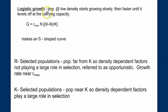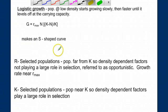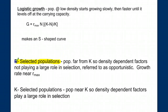In logistic growth, a population at low density starts growing slowly, then accelerates until it levels off at the carrying capacity — and there's our formula. We can describe populations as being R-selected or K-selected. An R-selected population, remembering that R stands for the intrinsic rate of growth — birth rate minus death rate.